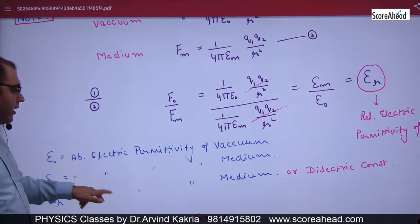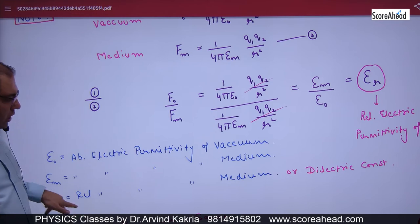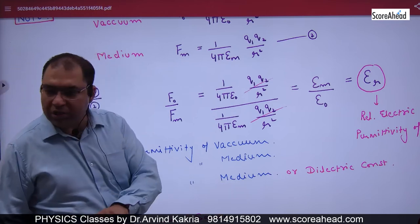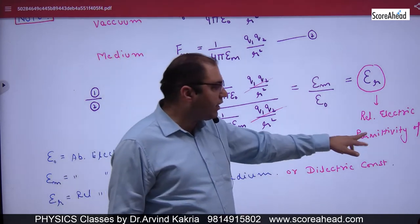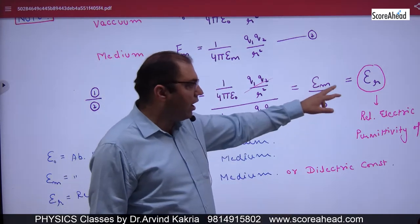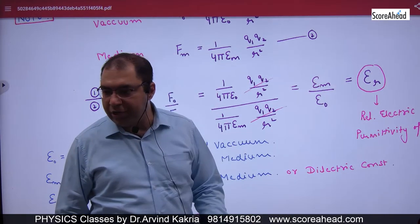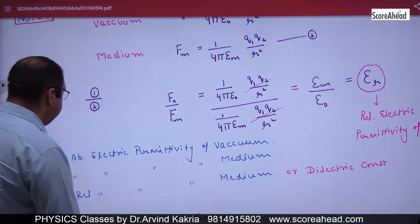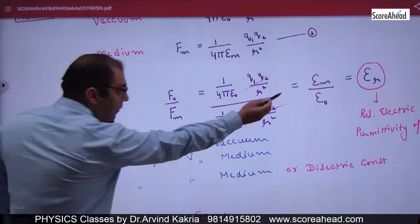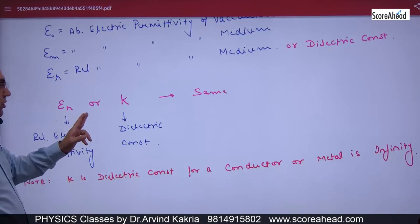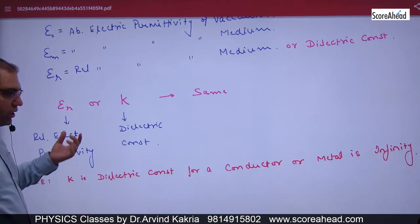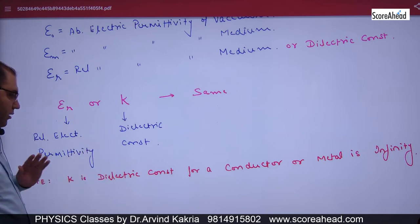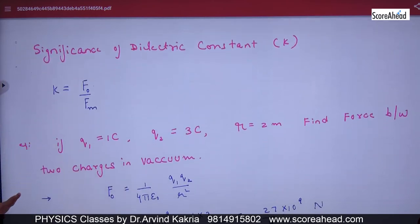Since ε_R is obtained by dividing two absolute permittivity values, it gives a relative term. This relative electrical permittivity of a medium has a short name: dielectric constant. It can be written as ε_R or K — they are the same thing. So ε_R = K = dielectric constant of the medium.